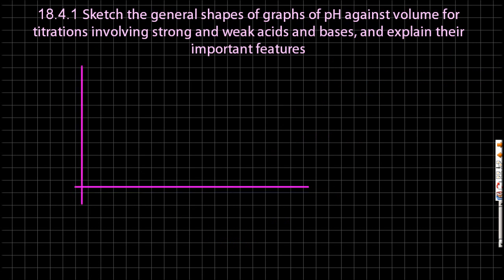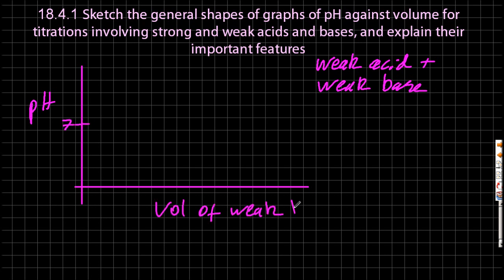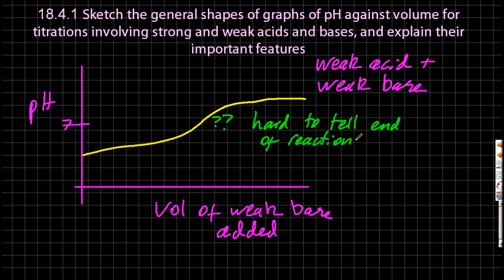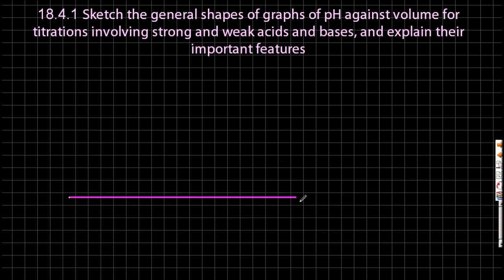Another graph. So this one here is weak acid and weak base. So it's just kind of a squidgy line around the 7. It's really hard to tell where the point of inflection is there. And it's hard to know if your reaction's finished at this point of inflection because you can't find it. So you've got to use conductivity measurements in order to work it out. The conductivity is the highest at the point of inflection.